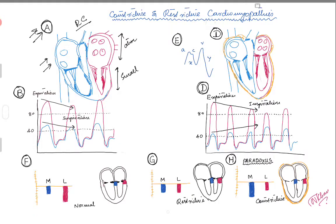On echo, the atria will be large and the LV, compared to the atria, will be small — which tells you this is something related to restrictive cardiomyopathy. The reason is that the whole heart is very stiff — the LV as well as the RV — so stiff that the atria have to do extra work to pump blood into the stiff left and right ventricles.